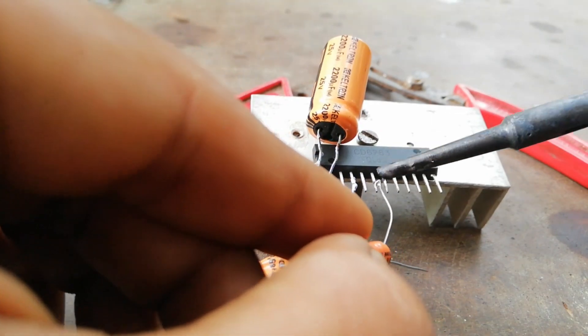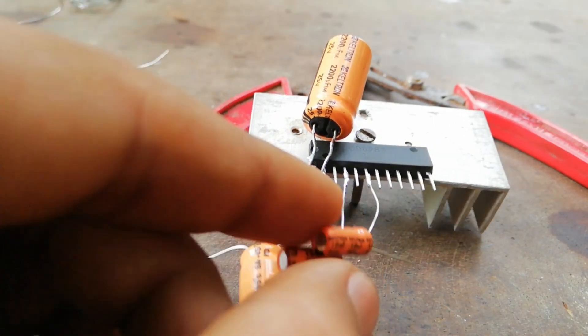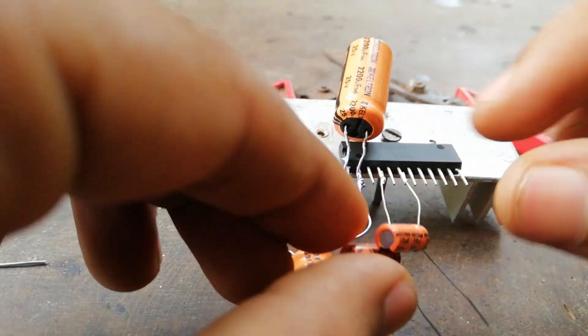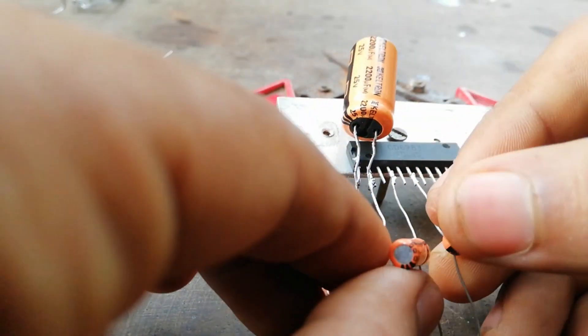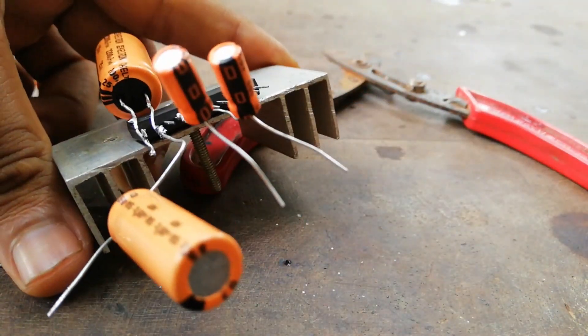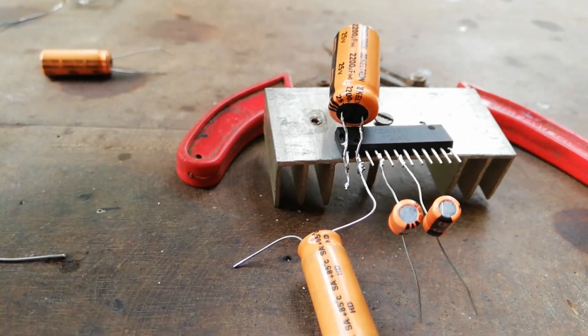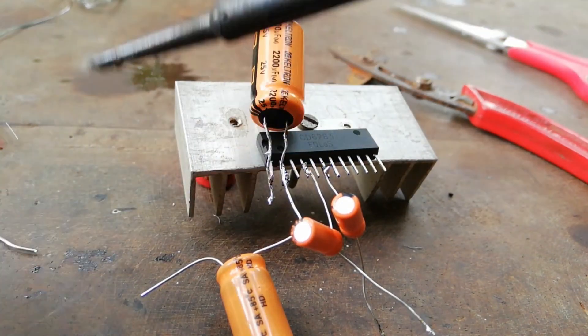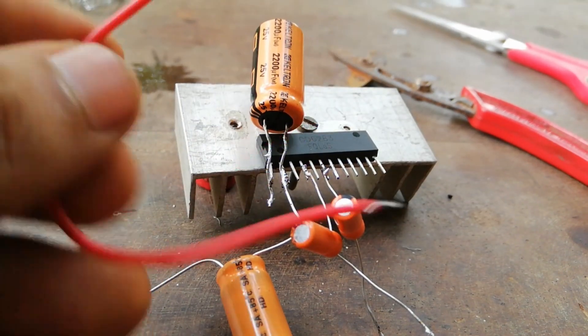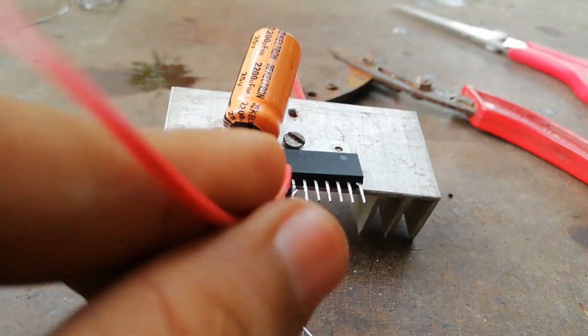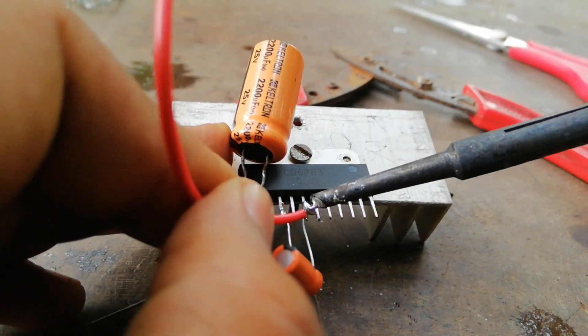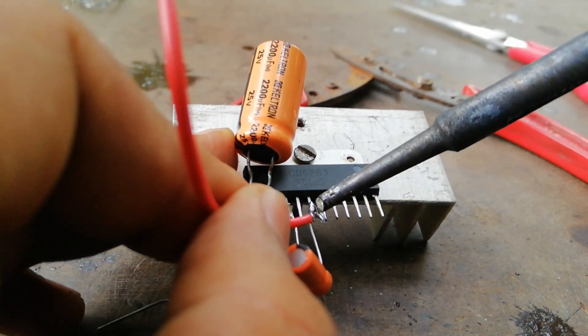Now we are going to solder the two 10 microfarad capacitors. Let's paste the capacitor and solder the capacitors in the 6th and 9th positions.